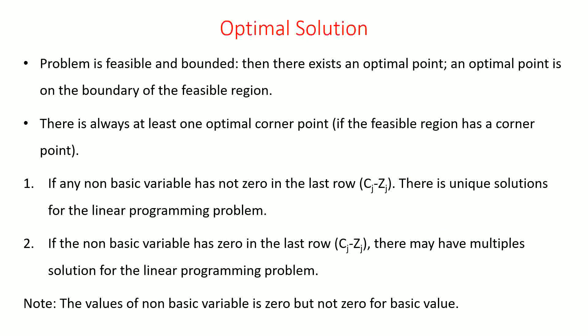The second solution is optimal solution. As I said before, optimal solution can be obtained from the feasible solution space. Graphically, we can obtain the optimum solution from the feasible solution space, particularly the corner points of that region. If the problem has a feasible and bounded solution, then there exists an optimal point on the boundary of the feasible region — specifically at the corner points of the feasible region.